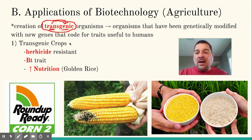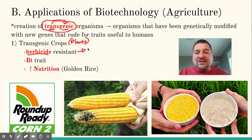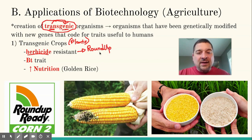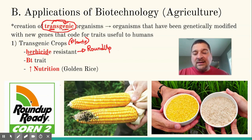Some examples of transgenic crops that farmers are using around the world include herbicide resistance. Remember, herbicide is something that kills plants. They actually found in one of the waste ponds where they were producing glyphosate — the main ingredient in Roundup — a bacterium that had a resistance gene to glyphosate, and so they took that gene and put it into crops like corn.